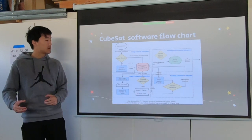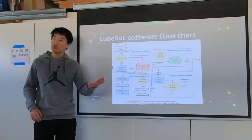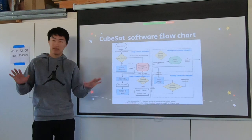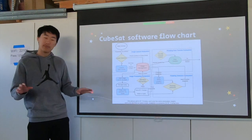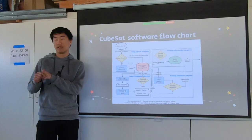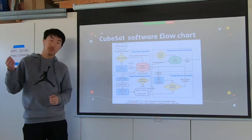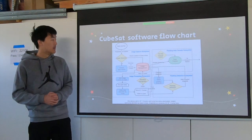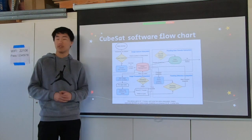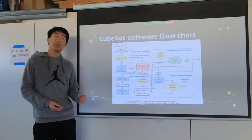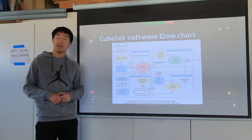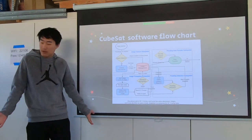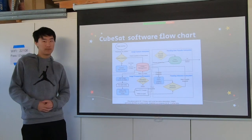In flood detection, we take one current image and one previous image and compare the two. If the amount of water inside the land area has increased, we know it's flooded. Then when we pass over a ground station, we transmit that data down so they'll know if it's flooded or not.